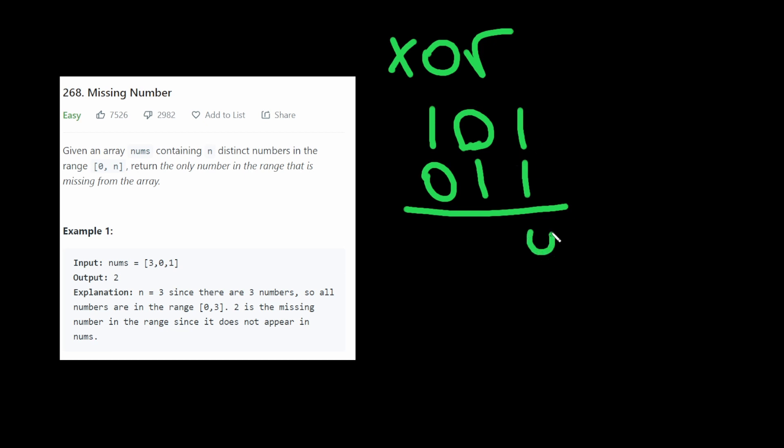So in this one, both are 1, so it returns 0. In this one, only 1 is 1, so it returns 1. Only 1 is 1, so it returns 1. It's an exclusive OR. It's either 1 or the other. Now there's one unique property of XOR that really helps us for this problem.